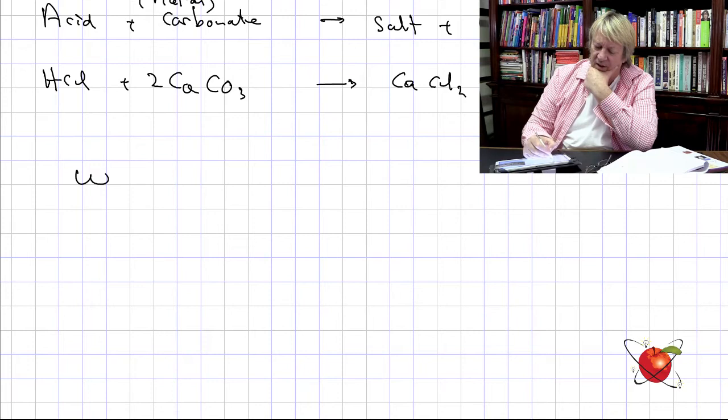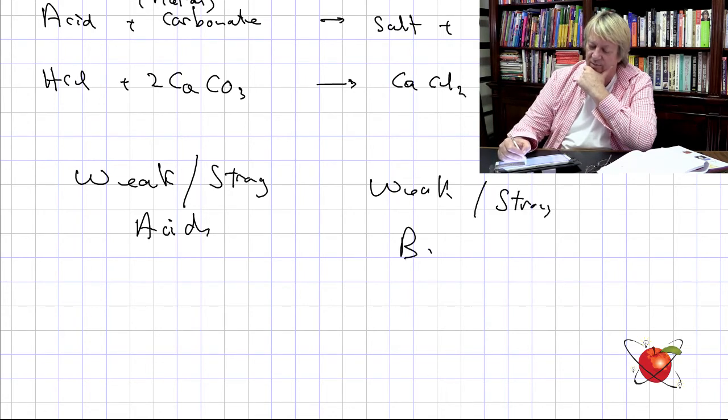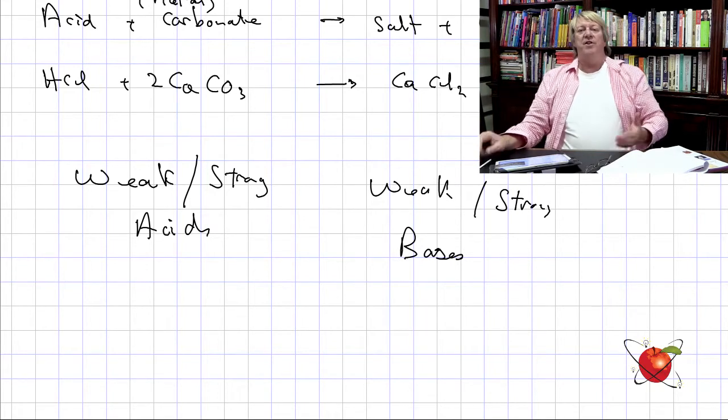Those are the basic reactions we need to consider, and in each case we know the products we're going to get. In the next section we're going to talk about what happens when we mix strong acids with weak bases, strong acids with strong bases, and various combinations — because we can have weak and strong acids and bases. A strong acid means full dissociation of the proton easily.